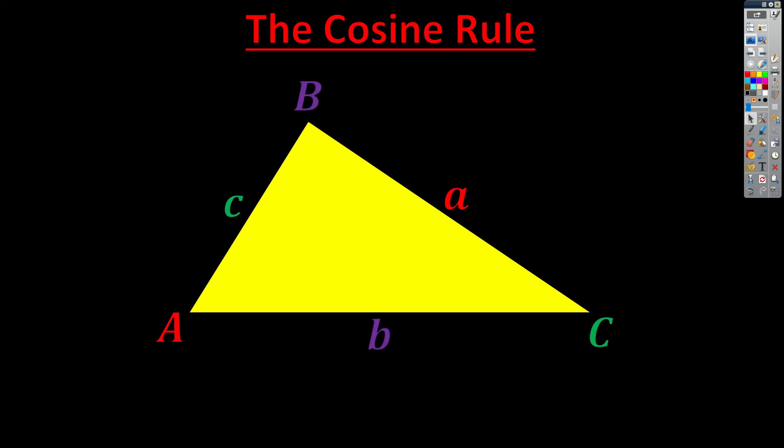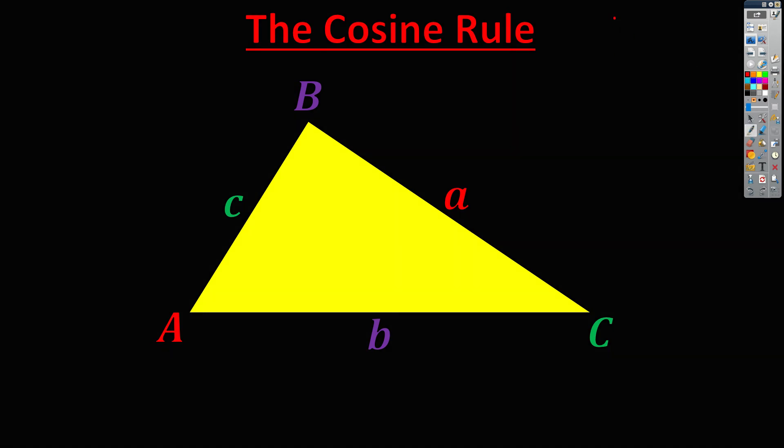And our aim is to link the three sides together. So you'll notice we know how to do that when our triangle has 90 degrees in. If we were to have A, B, C, then we know immediately what links these three together. It's going to be A squared plus B squared equals C squared. That's Pythagoras' theorem. But we're trying to do this now when our angles aren't necessarily 90.